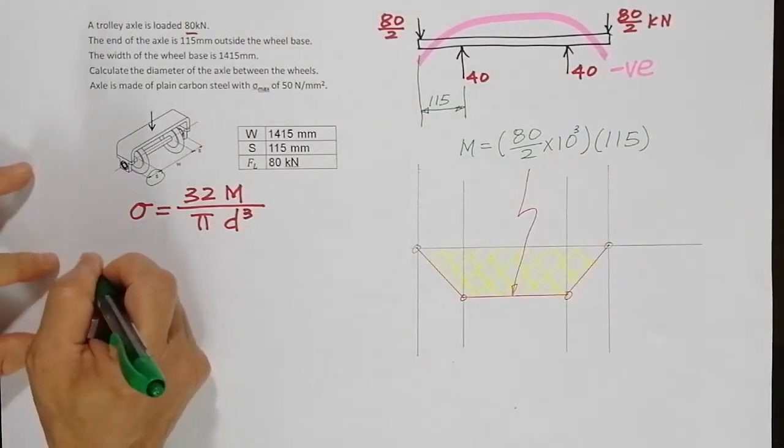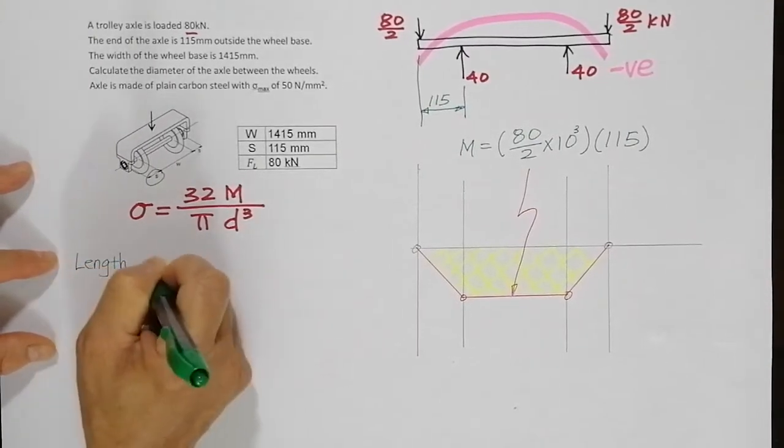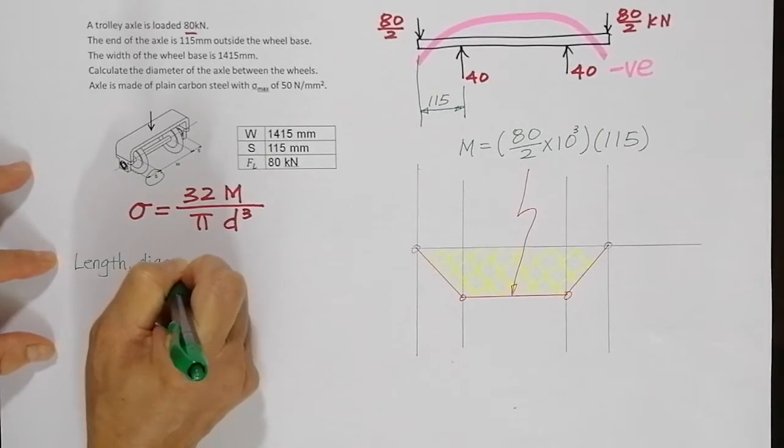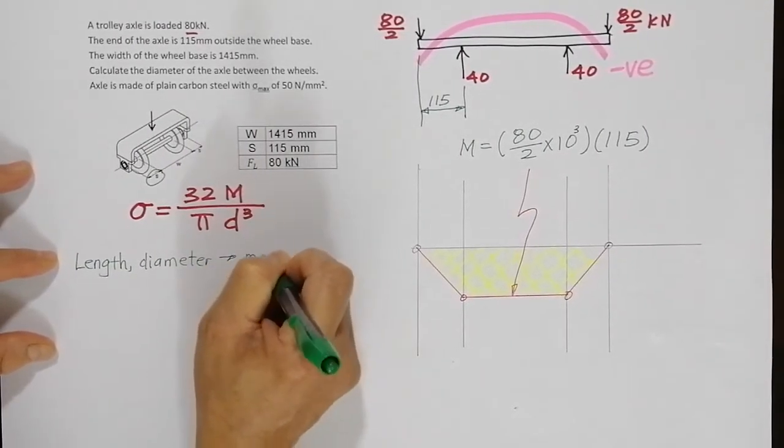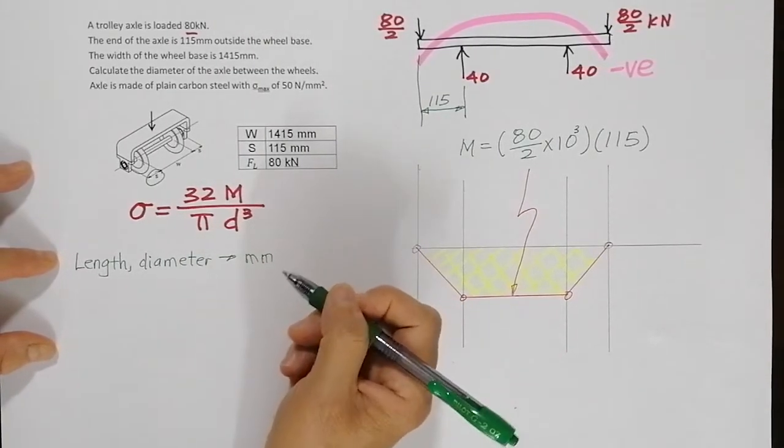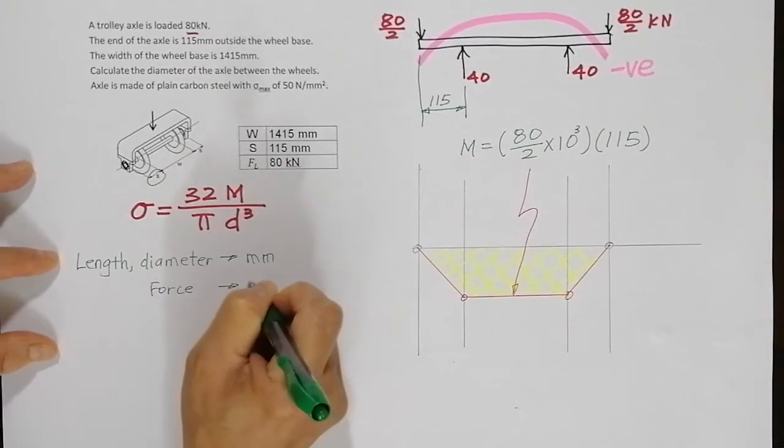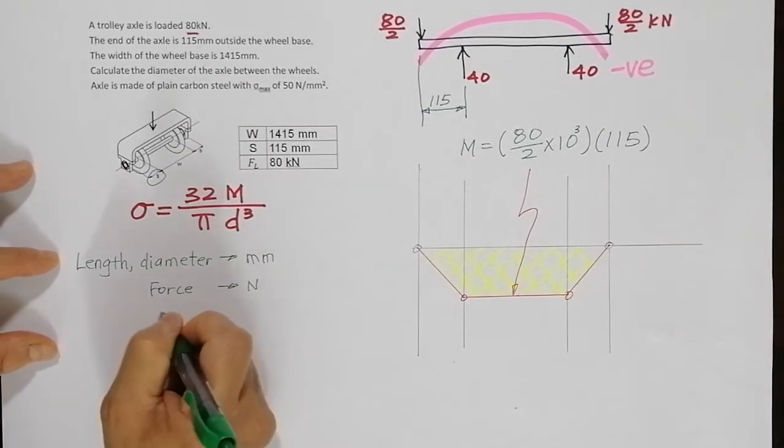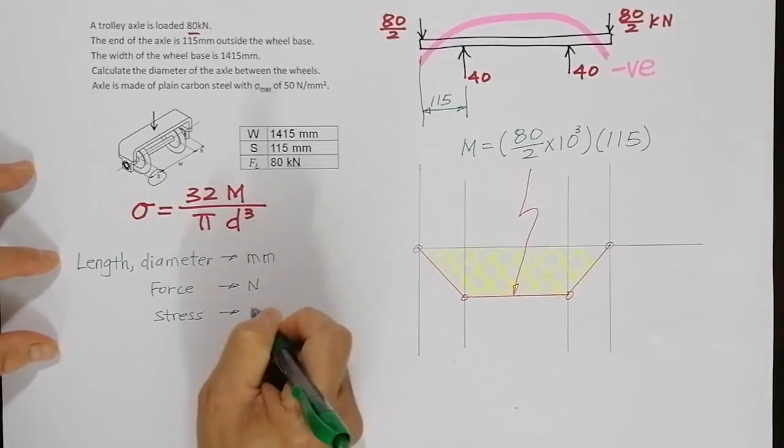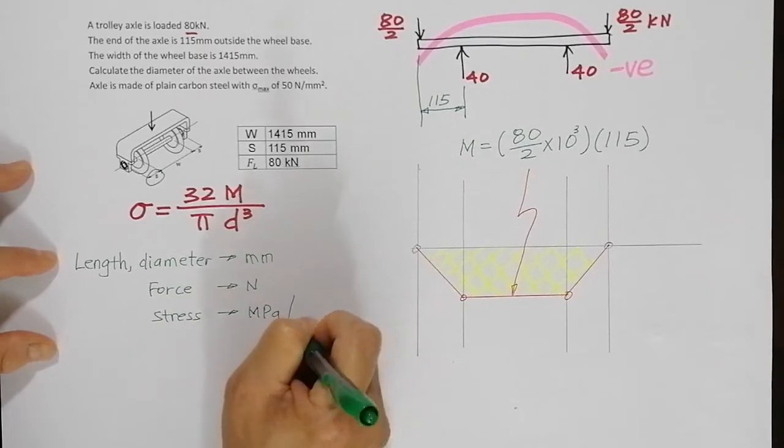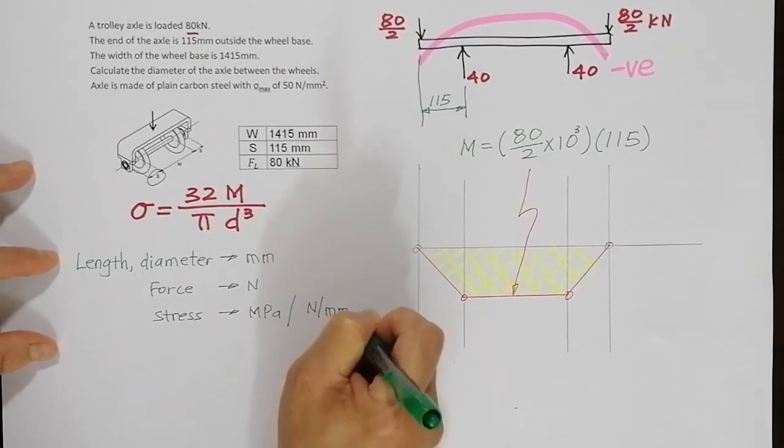I just want to put it in this way: the length or the diameter, the unit will be millimeter. Then the force, the unit will be in newton. Then the stress, the unit will be megapascal or newton per millimeter squared. They are the same. So basically these are the units I need to take care of.